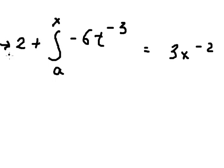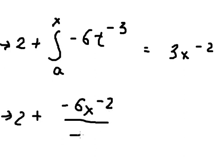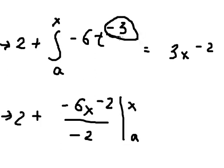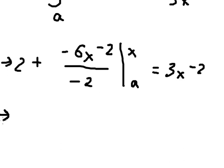Now if we do this integration, we will have negative 6 times x to the power of negative 2 over negative 2, because we take negative 3 plus 1, which gives negative 2. Simplifying negative 6 divided by negative 2, we get positive 3.